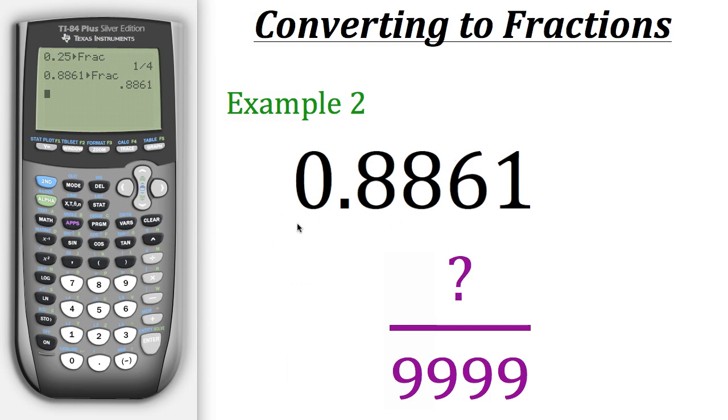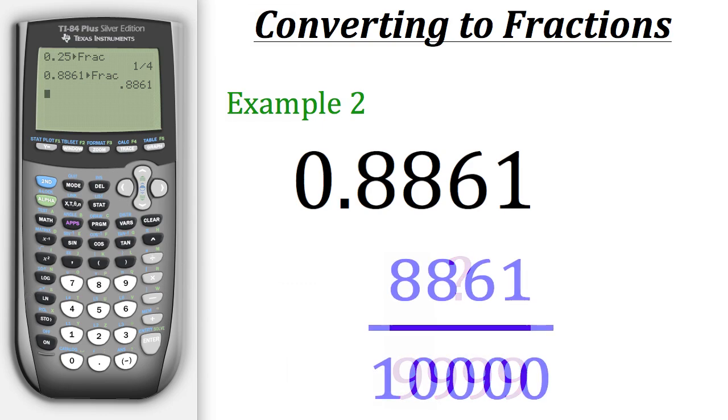In this case with 0.8861 its fraction form would be 8,861 over 10,000. Since 10,000 is greater than 9,999 the calculator did not give us its fraction.